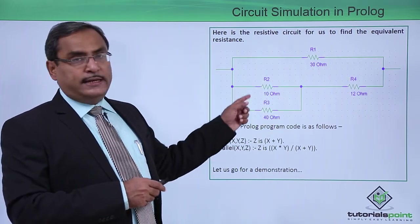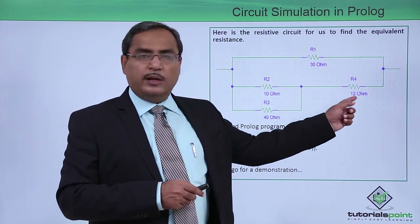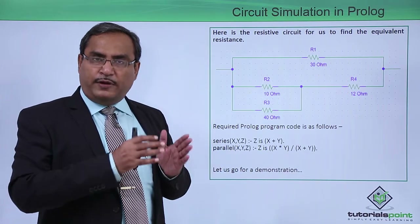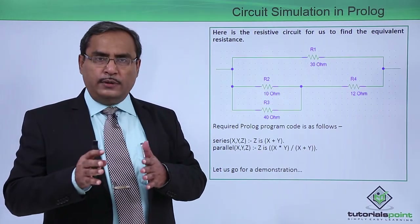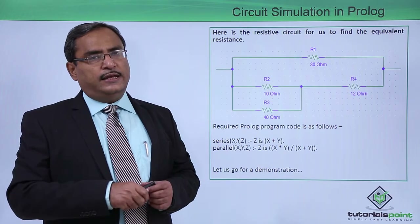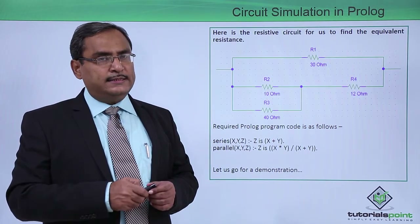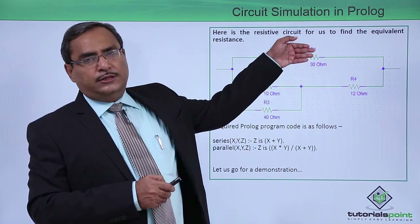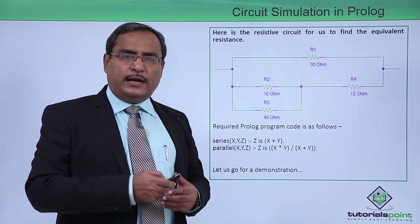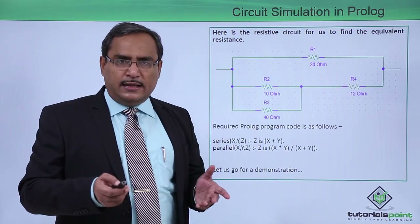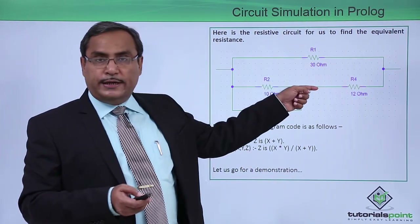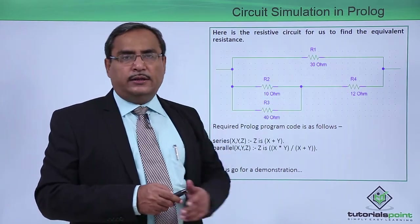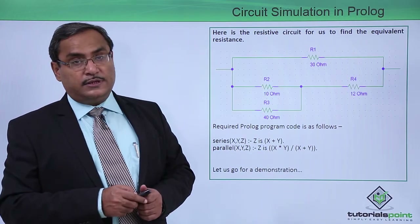This equivalent resistance of 8 ohm will be in series with the 12 ohm resistance. So the equivalent resistance will be 8 plus 12, that is 20 ohm. That 20 ohm and 30 ohm will then be in parallel, and in this way we can calculate the equivalent resistance of this ladder strip circuit.